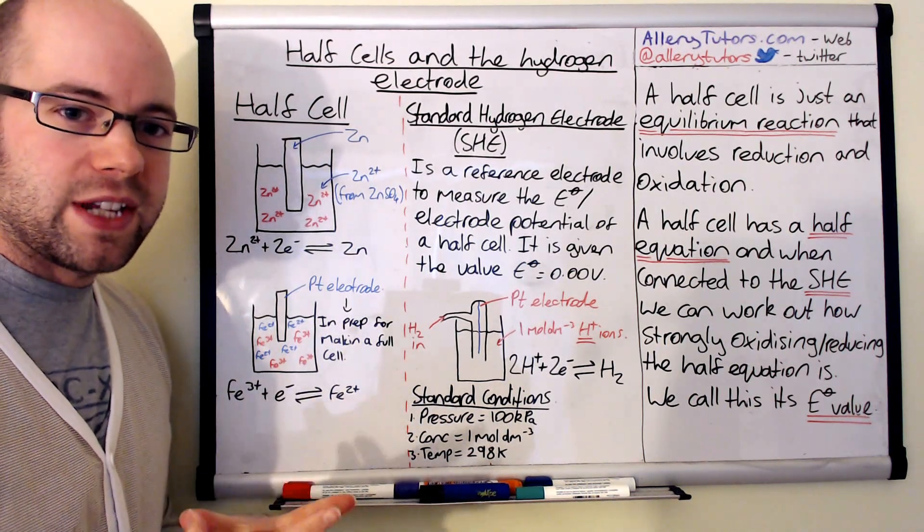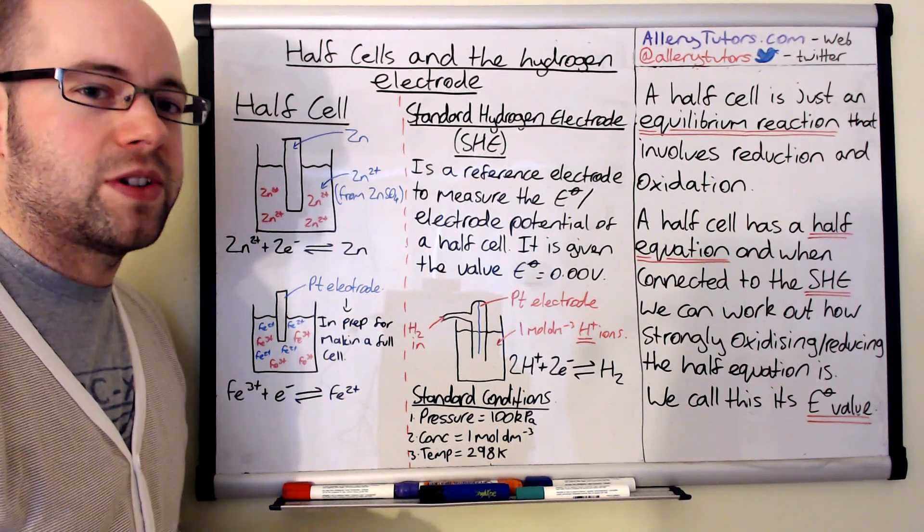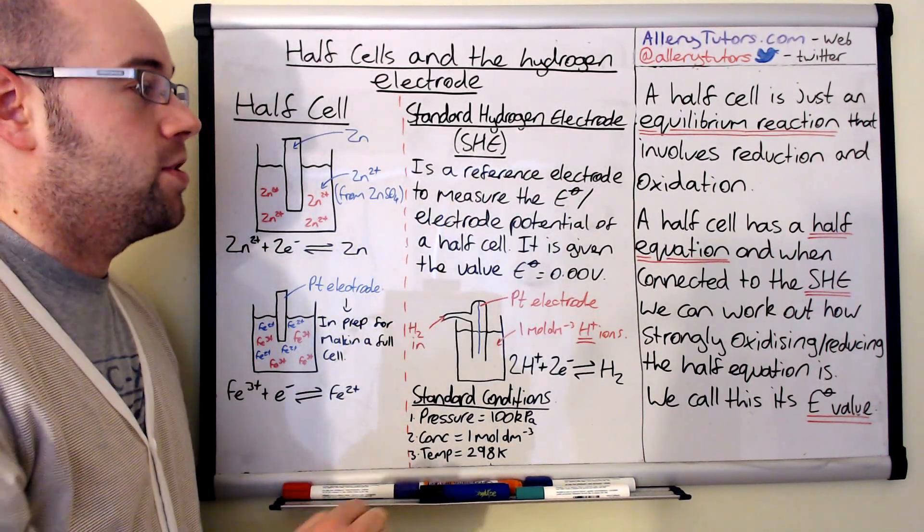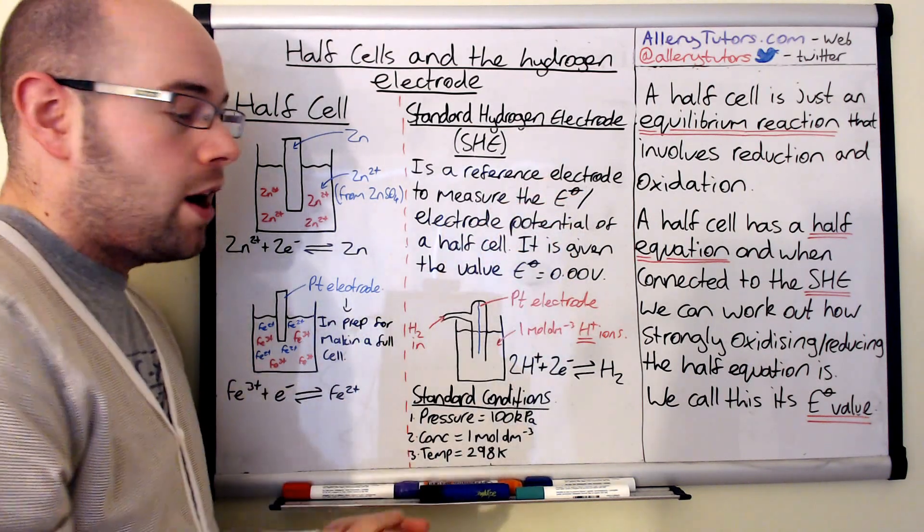We have to have a reference cell. We're going to call this the standard hydrogen electrode, or also known as the SHE. It's a reference electrode and it's used to measure the E⁰, or the electrode potential, of a half cell.